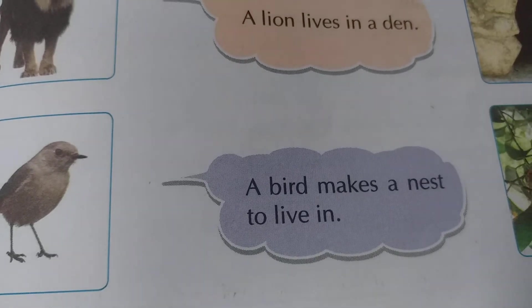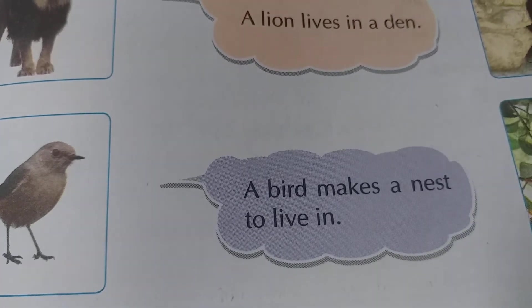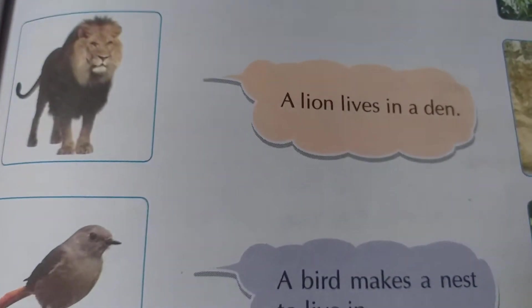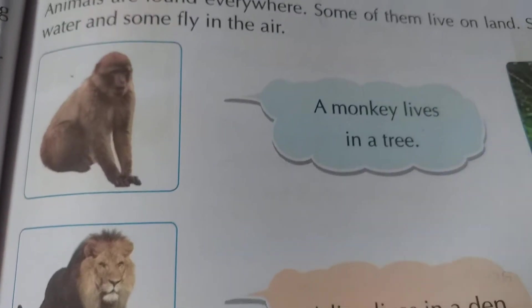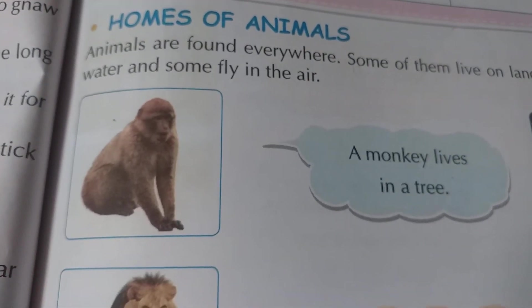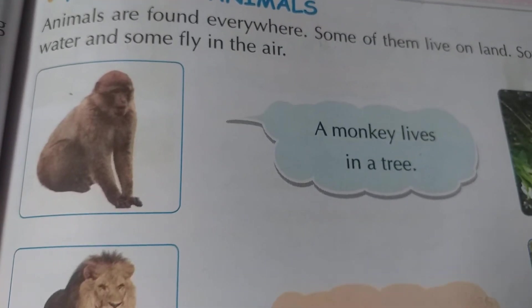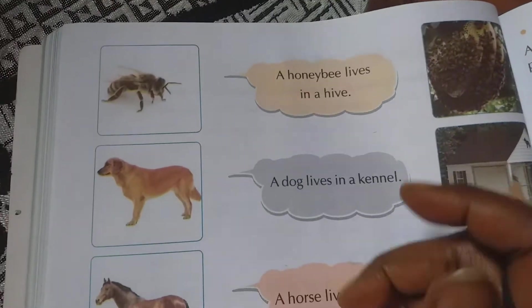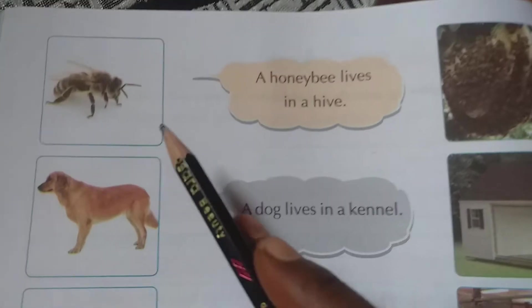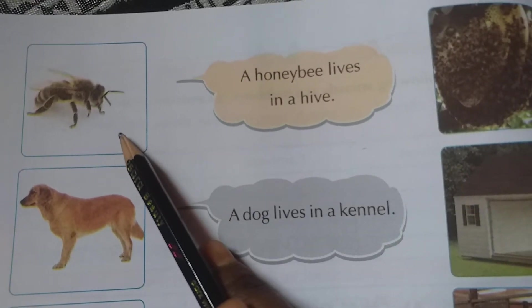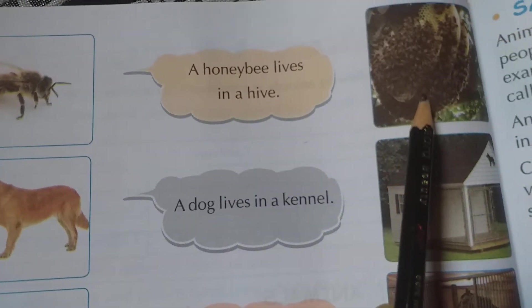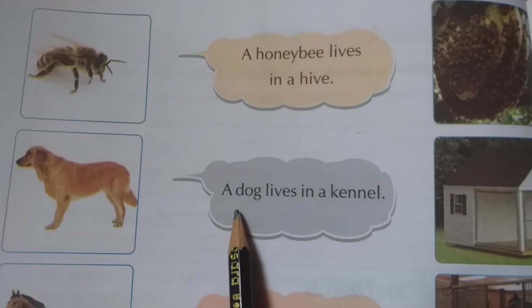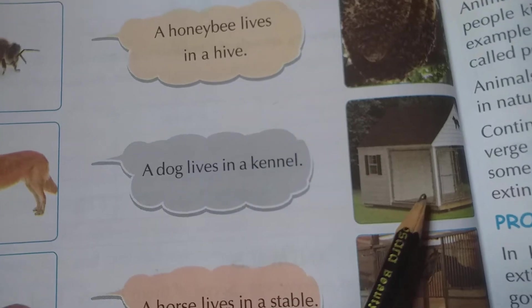A bird makes a nest to live in. So all animals have different types of homes and they live in them. Next, you can see the honeybee — honeybees live in a hive. You can see the picture here.